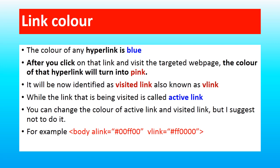We don't need to set any color by default, but since this topic is given in the chapter, suppose you want to set different colors — you can. The tag used to set the color of the active link is: inside the body tag write alink equal to any color you like. To set the color of the visited link, write vlink equal to any color of your choice.